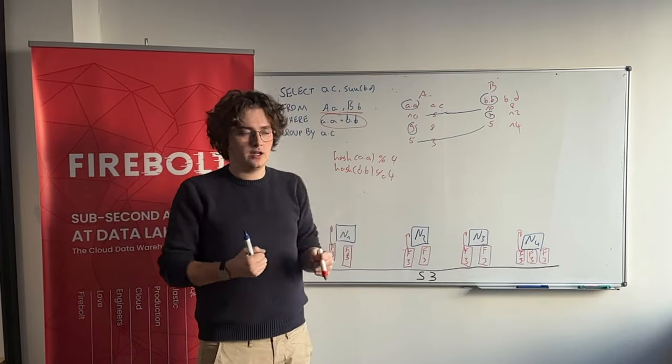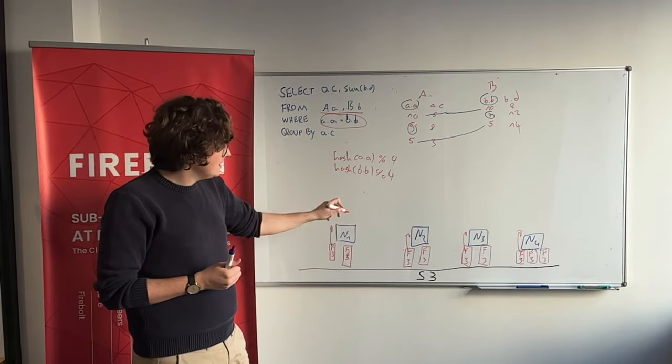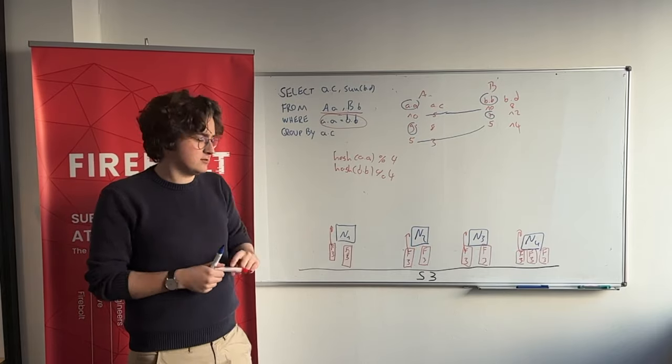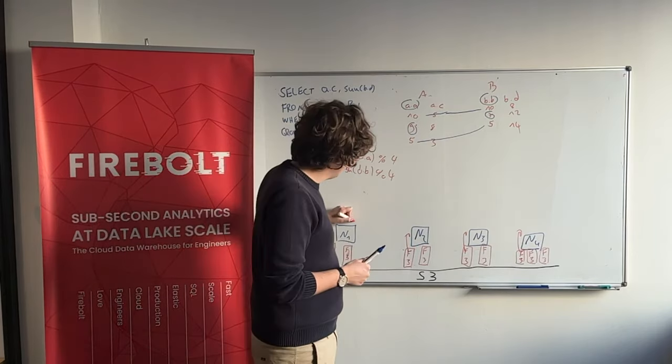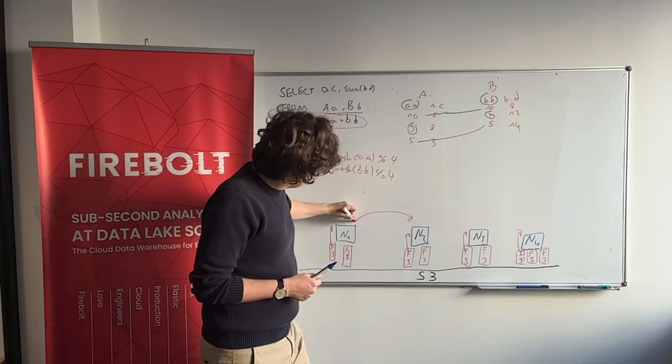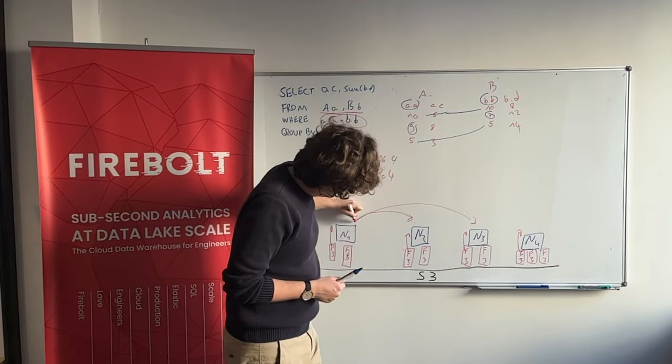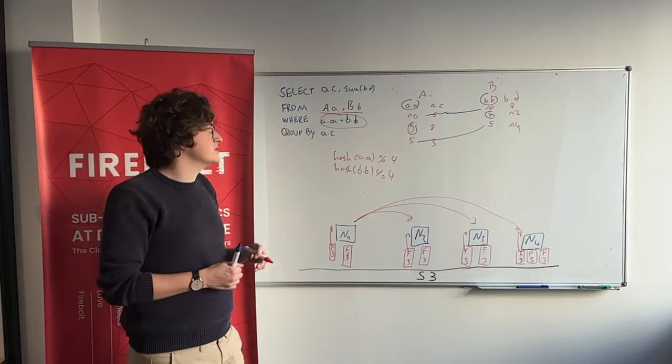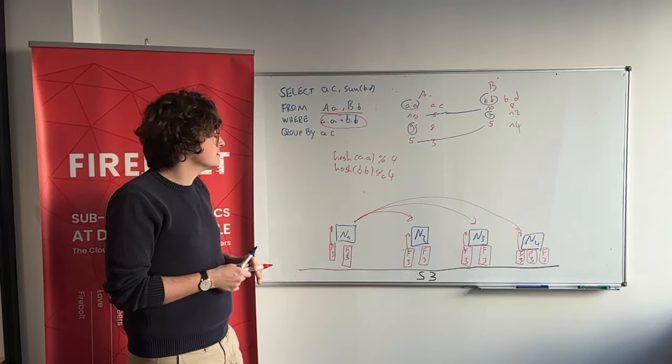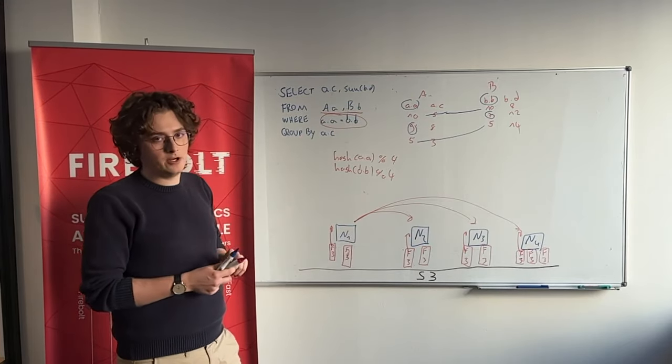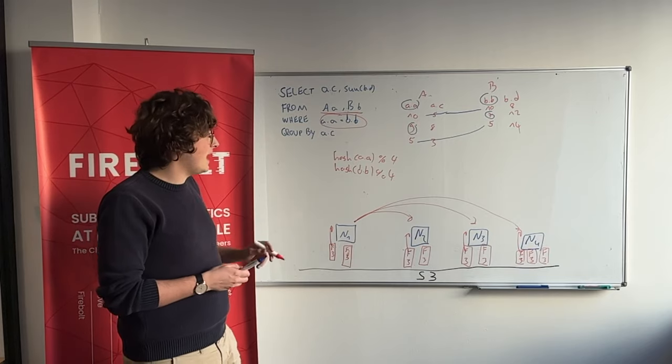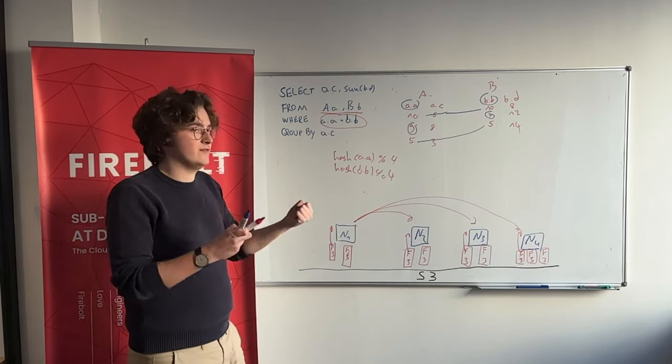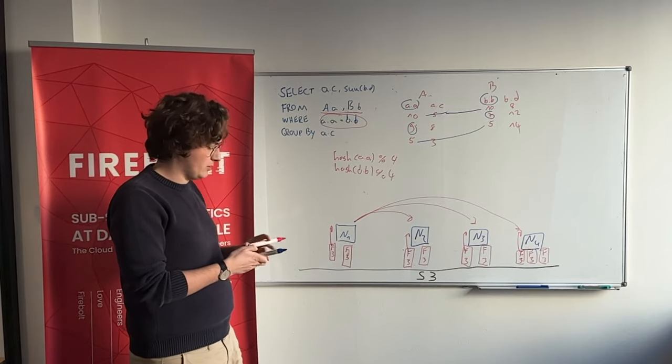What's happening is each node starts scanning the files it has loaded locally, and then it starts shuffling. It has this all-to-all communication where it takes the potential billions upon billions of rows from these two tables, hash partitions them by A.A and B.B. And in the end, everything will end up, all joint partners will end up on the same node.